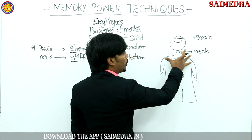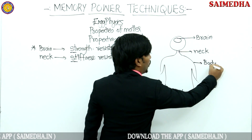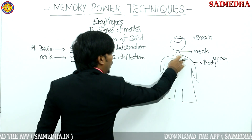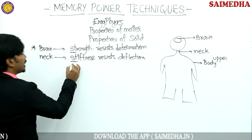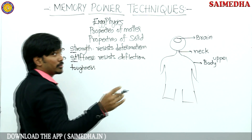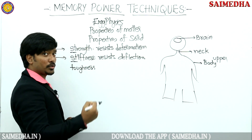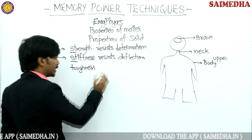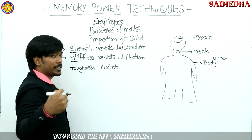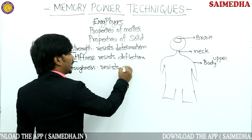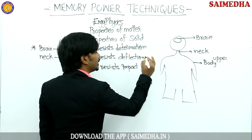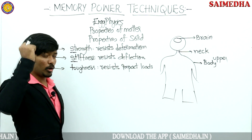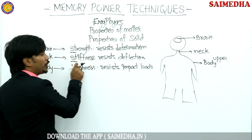Next property: we are talking about the body — the upper body. The upper body must be tough. Some load is going to be applied, so the human body must be strong. The similar word is toughness. If you apply huge blows — huge impact loads — the ability to resist impact loads is called toughness. So: brain → strong → strength; neck → stiff → stiffness; body → tough → toughness.